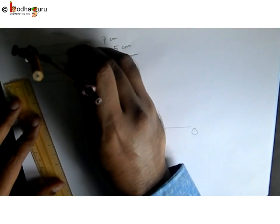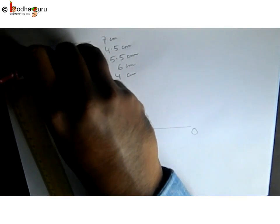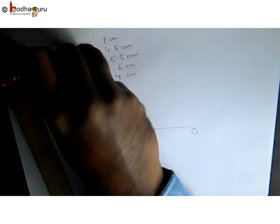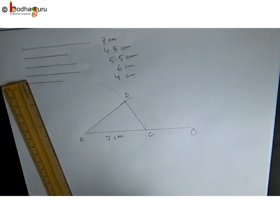Now same way we do AB and BC. We know AB is equal to 4.5 centimeter and BC equal to 5.5 centimeter.